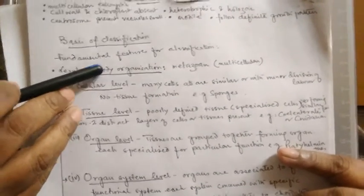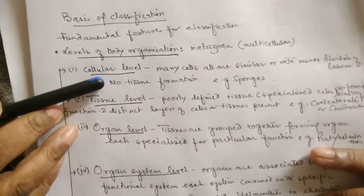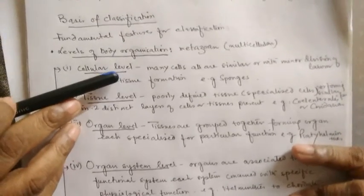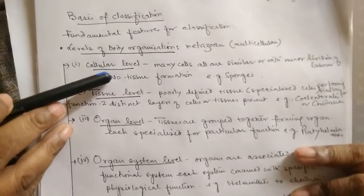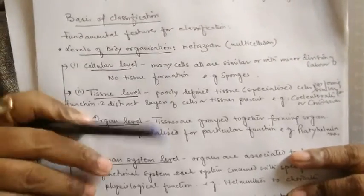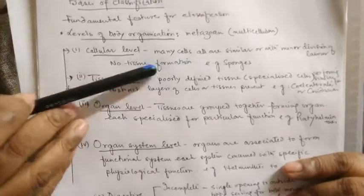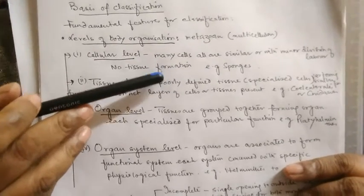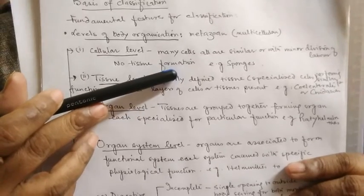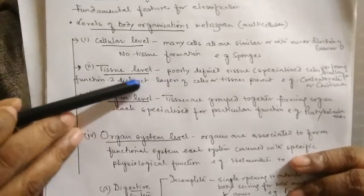First we will discuss about the different levels of body organization. It may be cellular — that means only some aggregation of cells, and division of labor exists in a very faint manner. Only the cells have aggregated. This we find in the sponges, that is phylum Porifera, with only cells aggregated and very minimal division of labor.